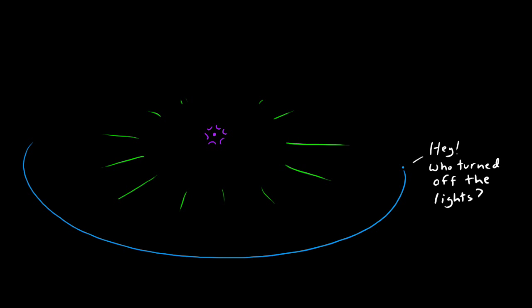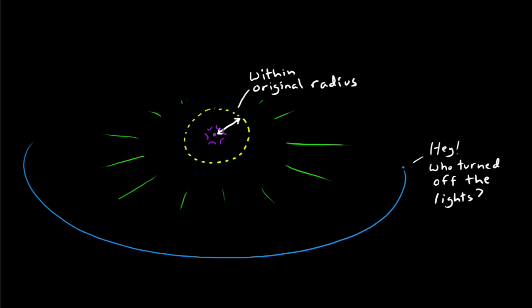The biggest danger is if you find yourself within the original radius of the star. That's where things would get, well, interesting. So let's talk about that. Let's talk about the geometry immediately surrounding a black hole.